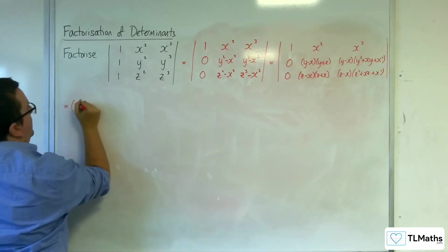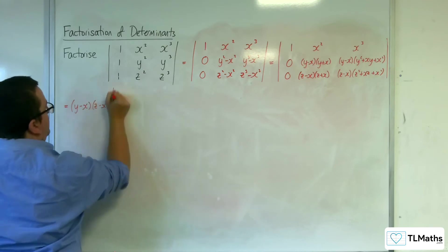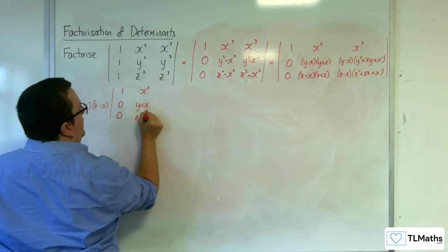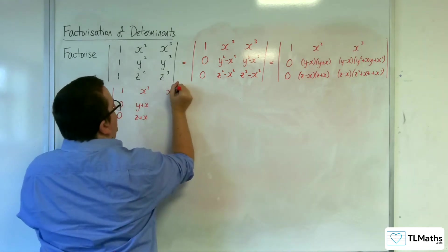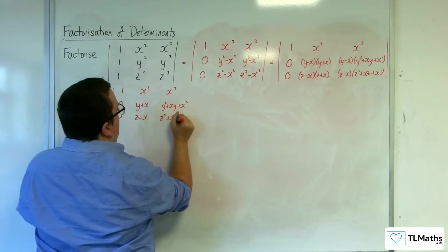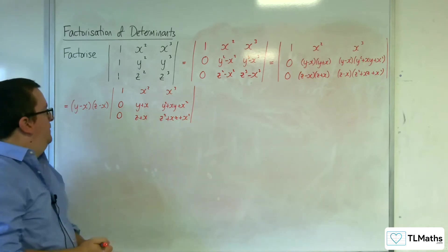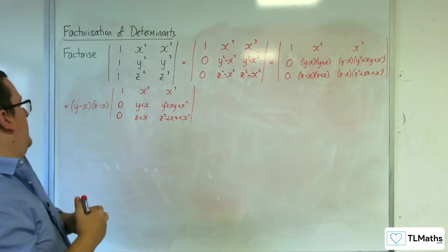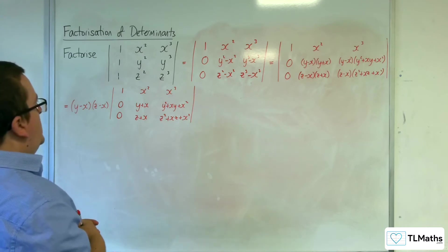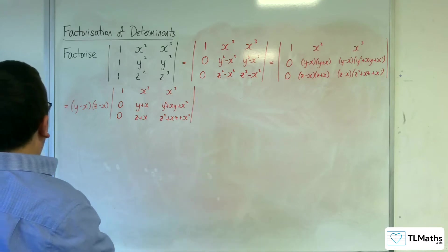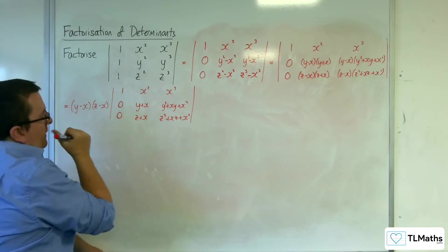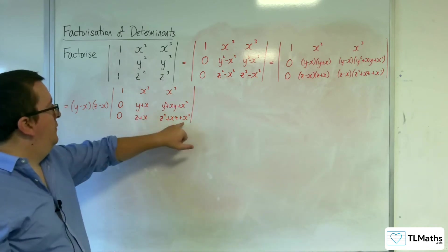I'm now reduced to a factor of (y − x)(z − x) times the determinant of the matrix with rows: 1, 0, 0; x², (y + x), (y² + xy + x²); and x³, (z + x), (z² + xz + x²). The next useful step would be to eliminate the common plus-x terms that appear in those two rows.